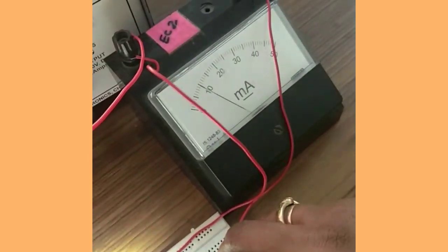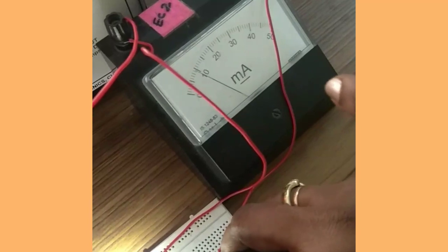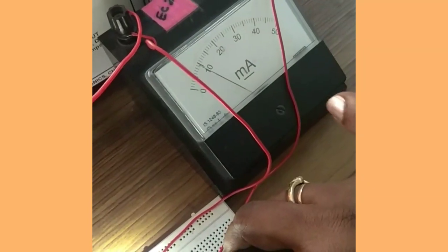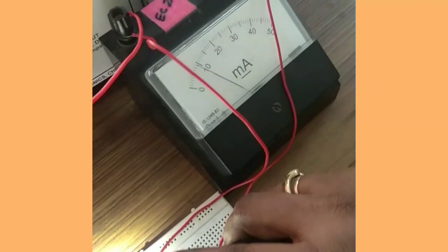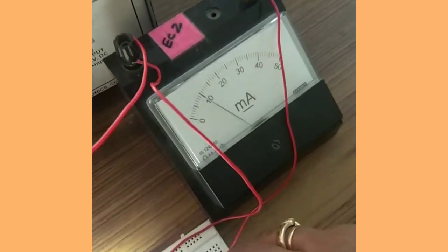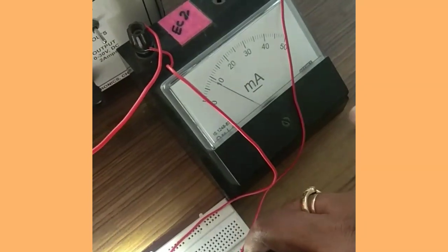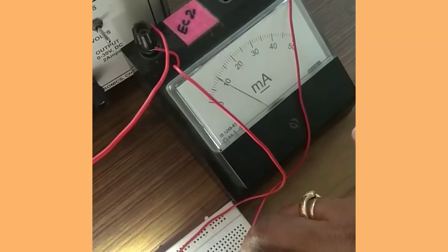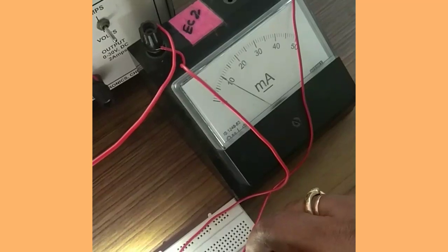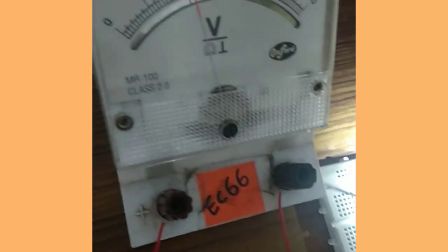You can see the mobile flash and the current reading. When the incident light is at a closer distance, that is when the intensity of the incident light is high, there is maximum current in the ammeter. You can also note down the drop in the voltmeter.